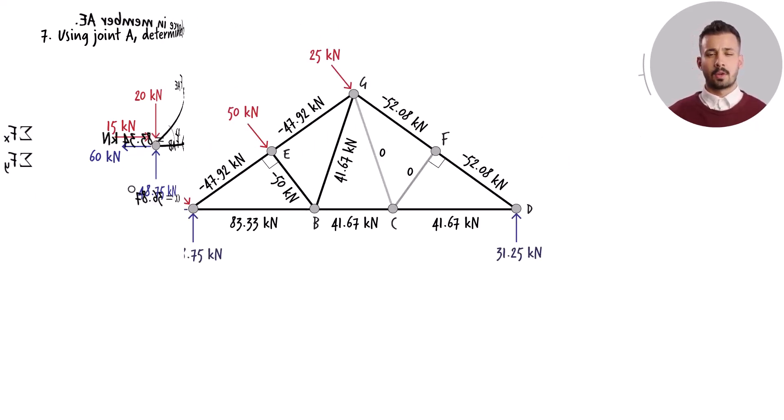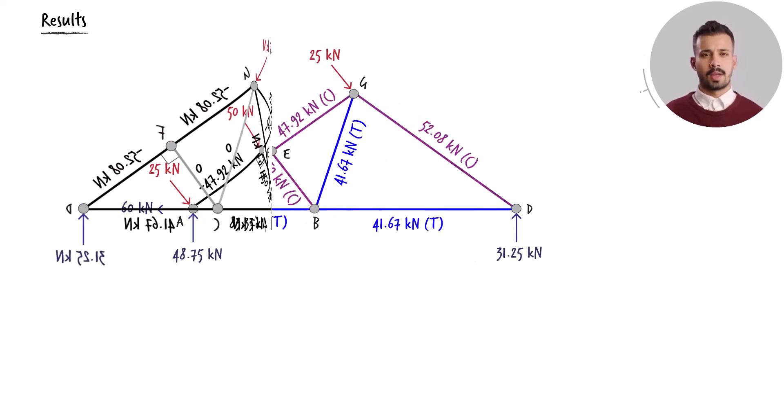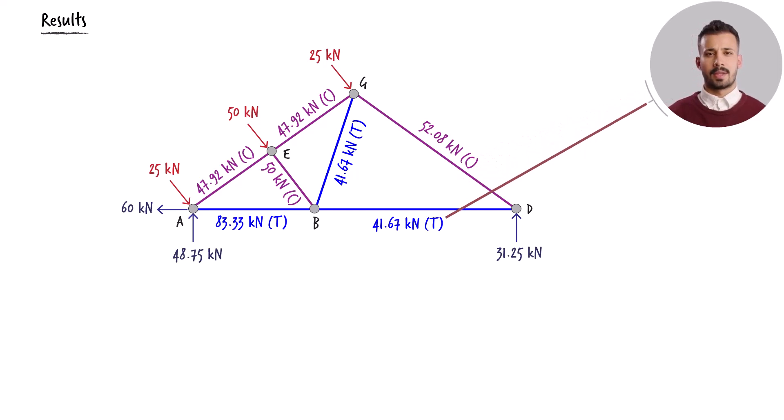To summarize the findings, we can annotate each member with its corresponding calculated force magnitude. Alternatively, we can write C to indicate compression, or T to signify tension next to each member force.